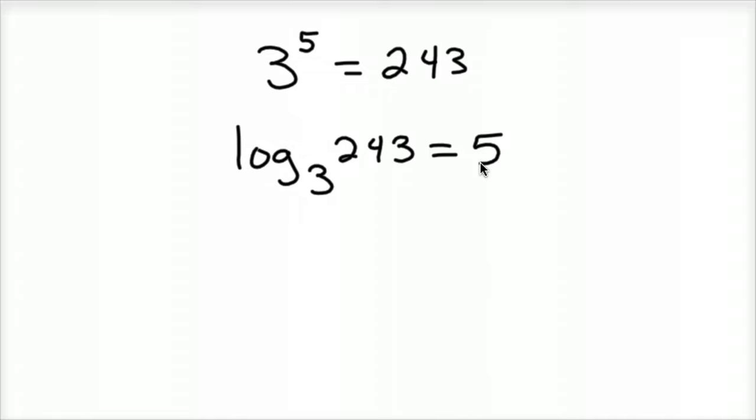So log base 3 of 243 should equal 5. A little quick thought to help you with this is anytime you have an exponent, the logarithm always produces the exponent. So notice here's the 5 and log equals 5.